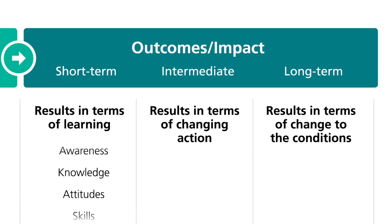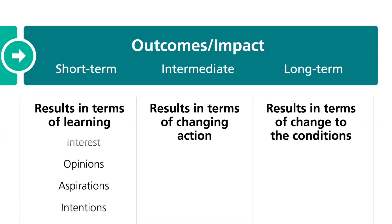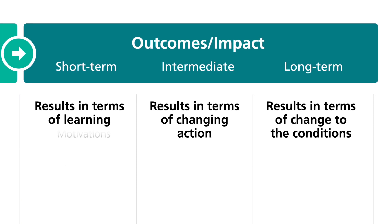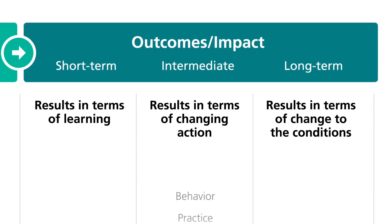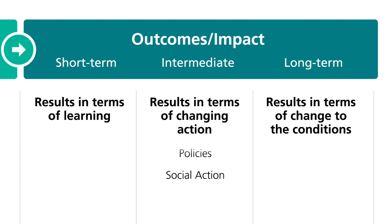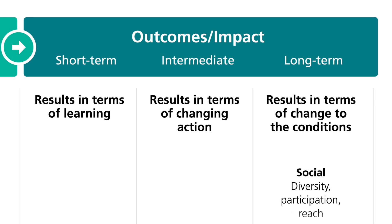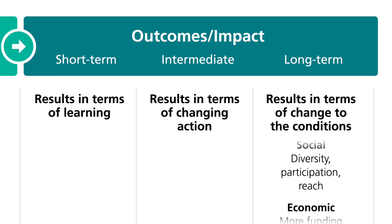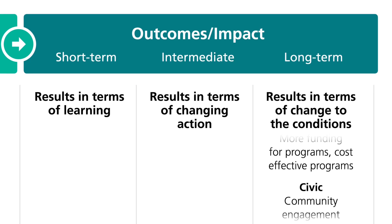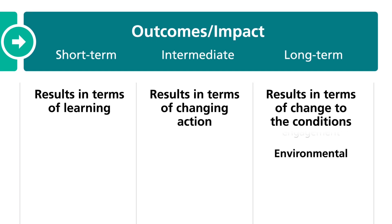Short-term outcomes refer to immediate or initial changes. These outcomes result in the participants learning something. Intermediate outcomes are the midpoint changes and result in the participants changing a behavior. Long-term outcomes refer to the ultimate result or impact and require a change to the social, economic, civic, or environmental conditions.